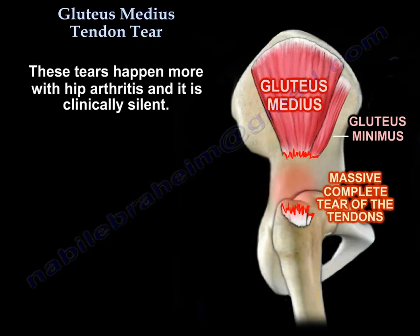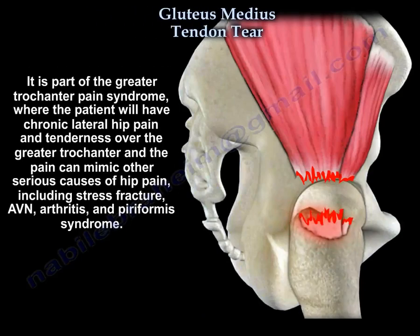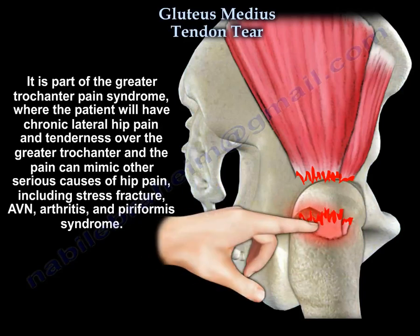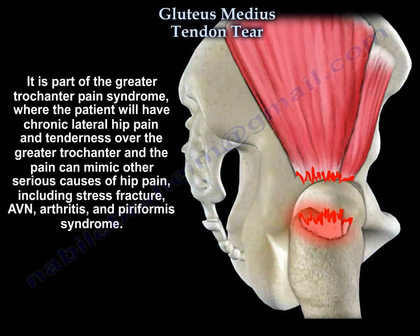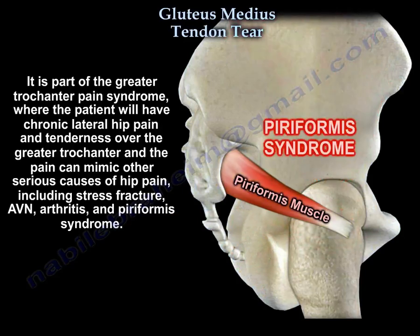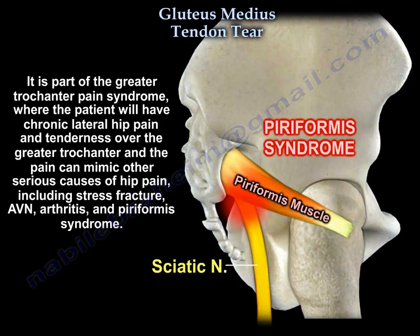These tears happen more with hip arthritis, and it is clinically silent. It is part of the greater trochanter pain syndrome, where the patient will have chronic lateral hip pain and tendinosis over the greater trochanter. The pain can mimic other serious causes of hip pain, including stress fracture, AVN, arthritis, and piriformis syndrome.